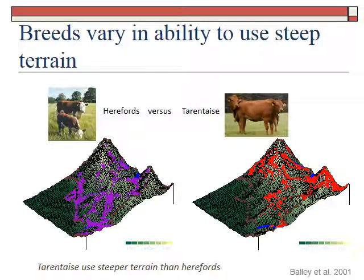Here's an example of how animals are born with certain abilities to use habitat. A study was done in Montana by Derek Bailey comparing Hereford cattle versus Tarantay cattle. Herefords grew up in the British Isles on relatively moderate climates and easy terrain. Tarantays grew up in the French Alps and learned to use really steep country — their predecessors always used steep country. They have long legs and are really built to get up into the hills.